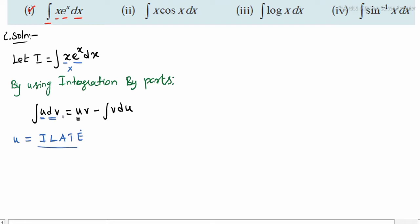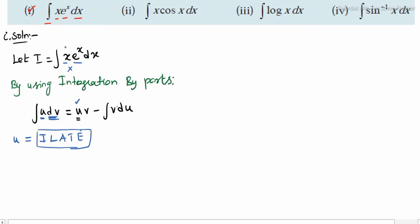Now, u as value — we find it by differentiation. v as value — we find it by integrating dv. In this place, x comes first and it is algebraic. So u is equal to x. Therefore, dv is equal to e power x into dx.